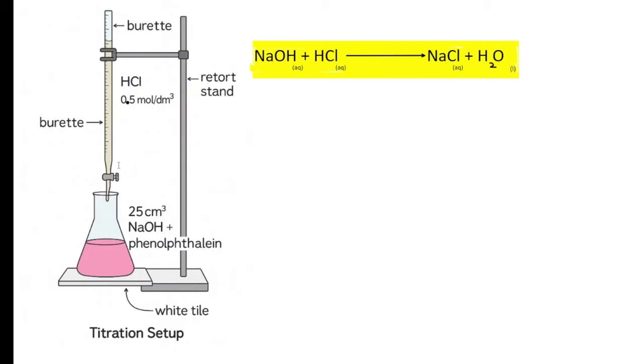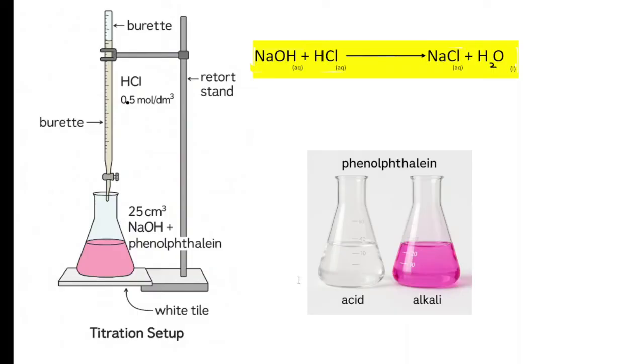You open the top of the burette and you swirl the conical flask and observe the color. It will start to go lighter and lighter and at some point it will go colorless. This is the end point. Here is the color change in the diagram: in the alkaline solution it's pink in color, in an acidic solution it goes colorless. That's what you need to look for.